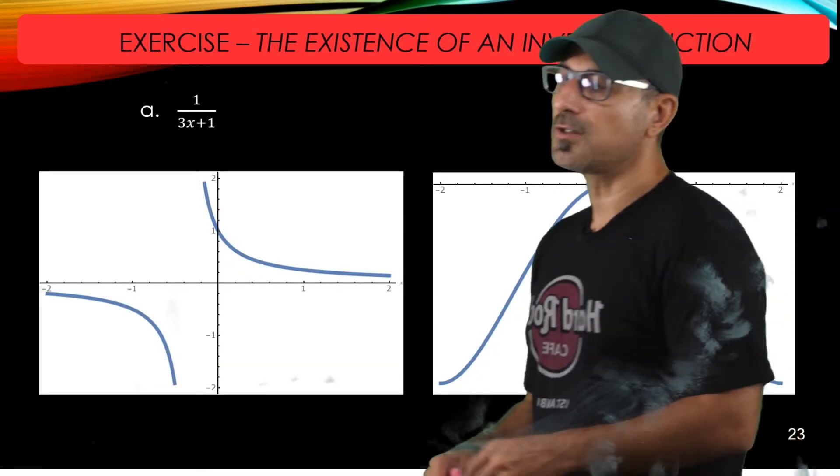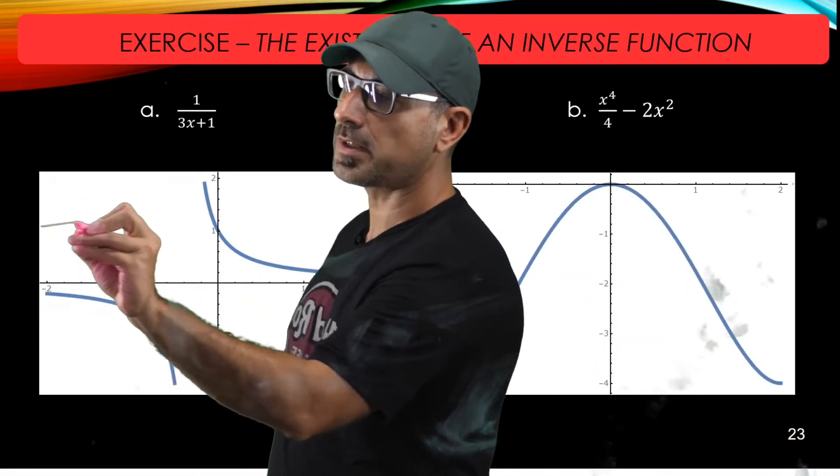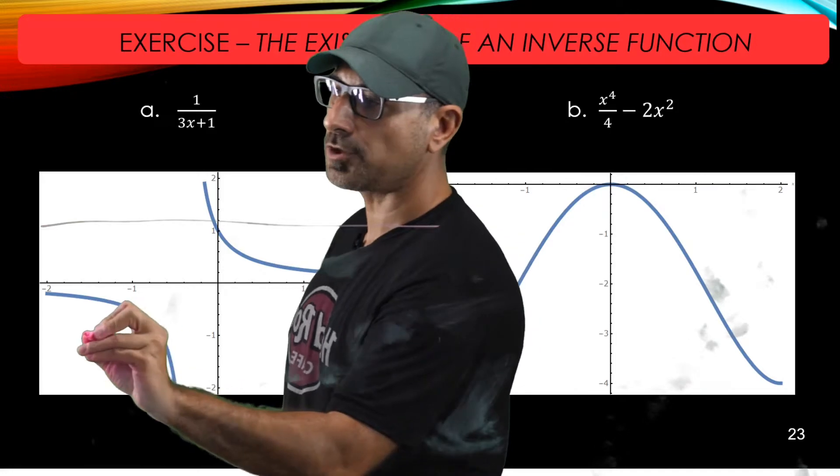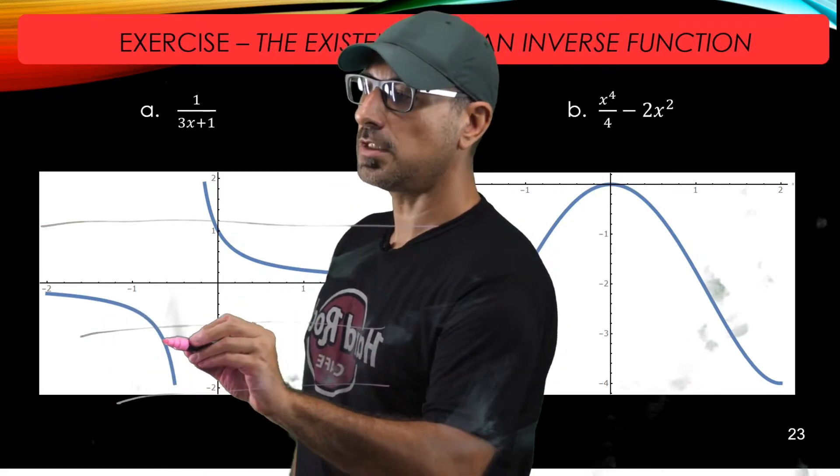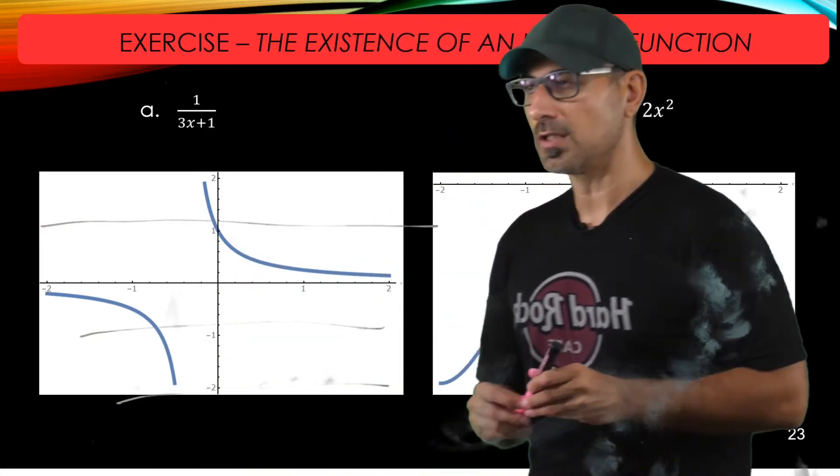So if you look at this one, no matter what kind of horizontal line you pick, the intersection is happening at only one point with the graph and the horizontal line.